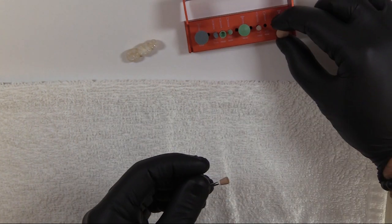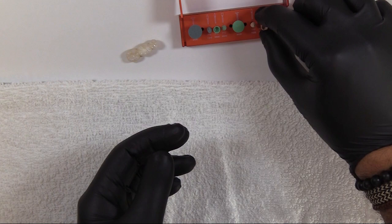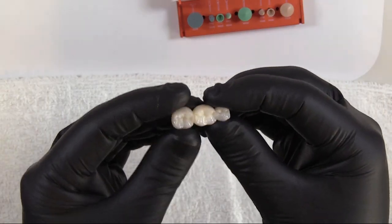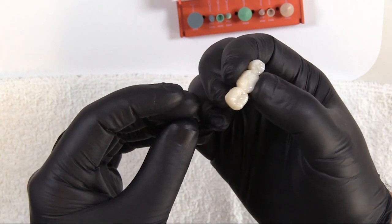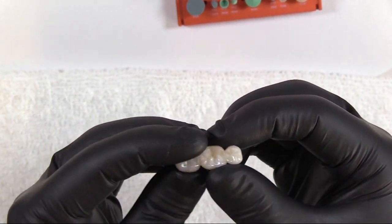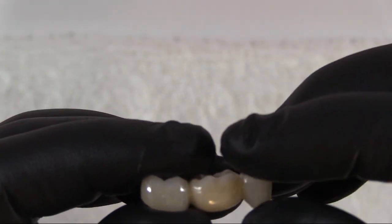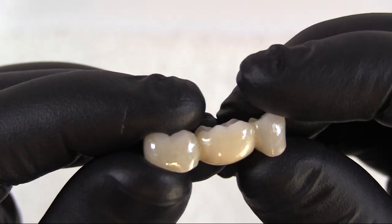We're going to go through a step-by-step process of how we like to adjust and polish zirconia. This is a three-unit zirconia bridge. I'd like to have a checklist as far as how to assure we have complete seat of the restoration.